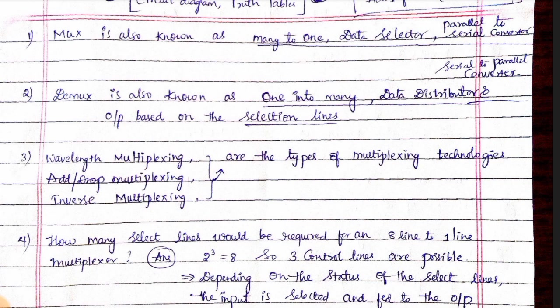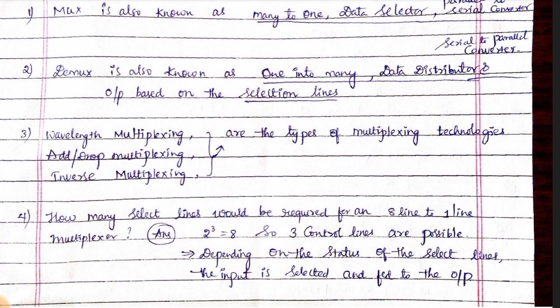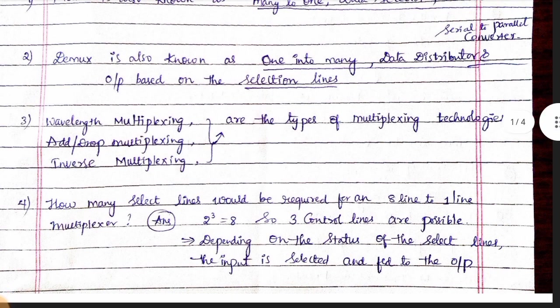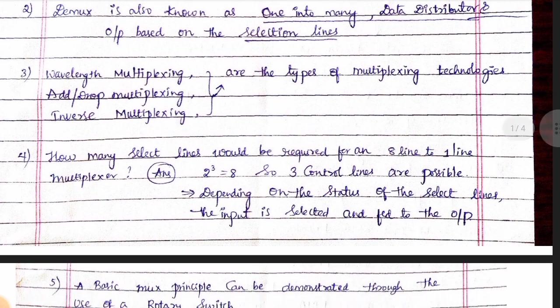How many selection lines would be required for an 8-line to 1-line multiplexer? How many selection lines would be required for an 8-by-1 multiplexer? Since 2 to the power of 3 is equal to 8, the answer is 3 control lines.